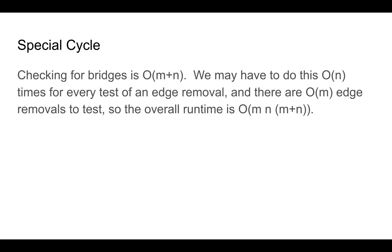Checking for bridges takes time O(m+n), the number of edges plus the number of vertices. Because checking for bridges might remove a node in order to satisfy our special cycle removal, we may have to do this O(n) times. And there are O(m) edge removals that we need to check.